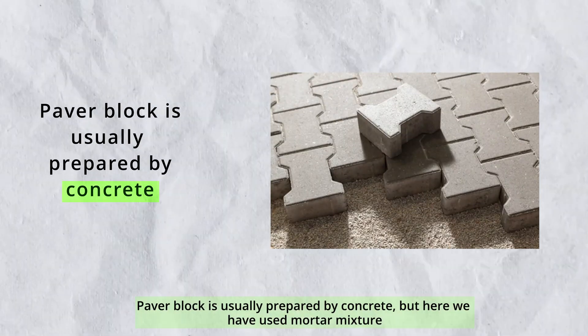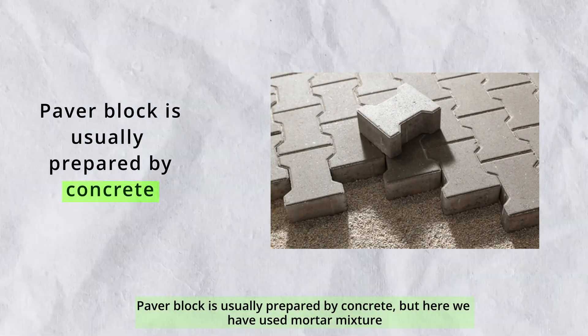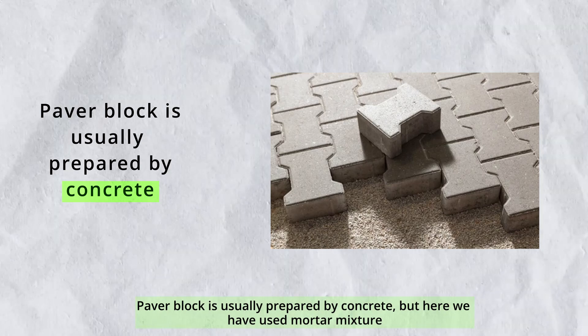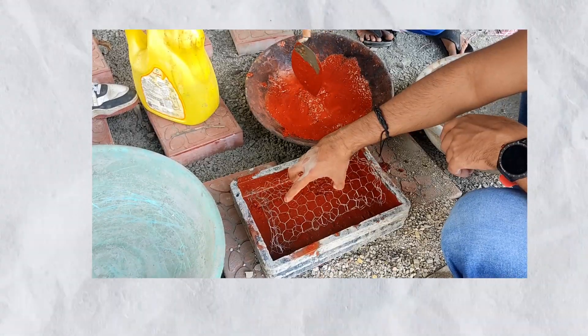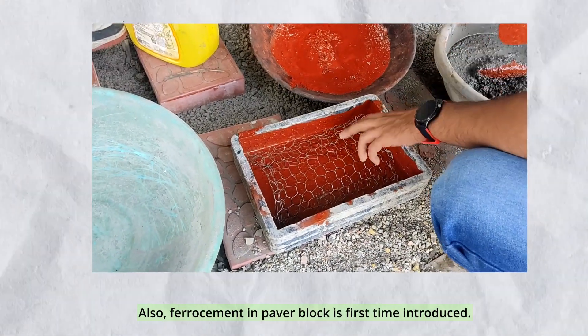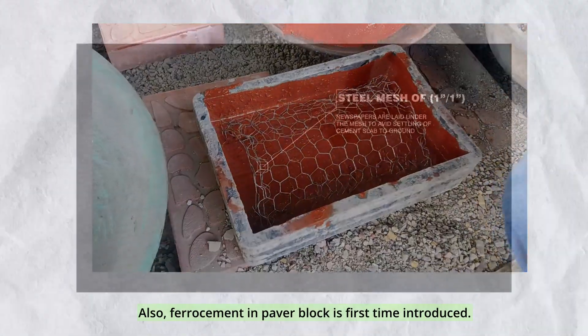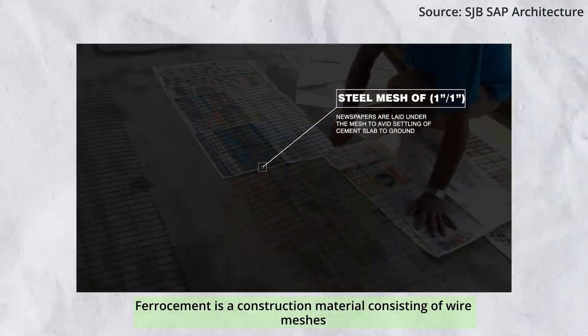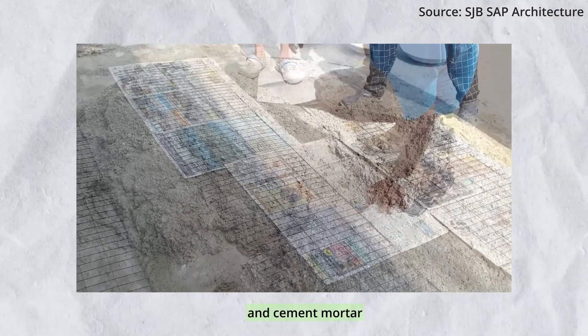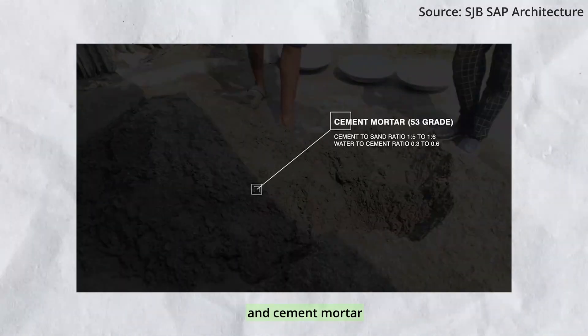Paver block is usually prepared by concrete, but here we have used mortar mixture. Ferro-cement and paver block is introduced here for the first time. Ferro-cement is a construction material consisting of wire meshes and cement mortar.